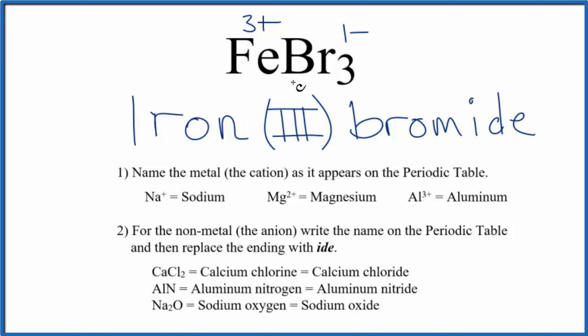An older name is ferric bromide. And because there's quite a bit of covalent character in the bond between the iron and these bromine atoms, those bonds with that covalent character there, sometimes you might hear this called iron tribromide.